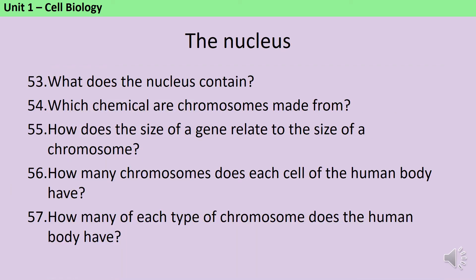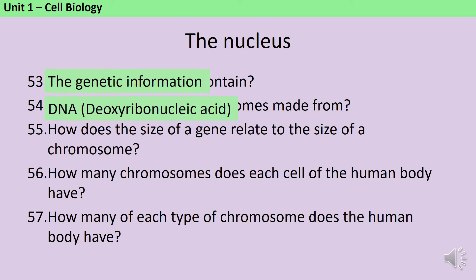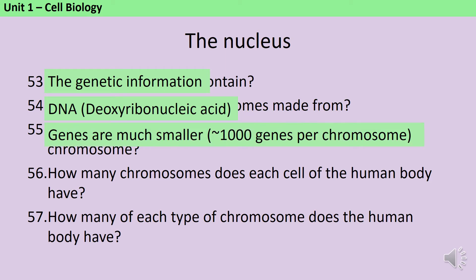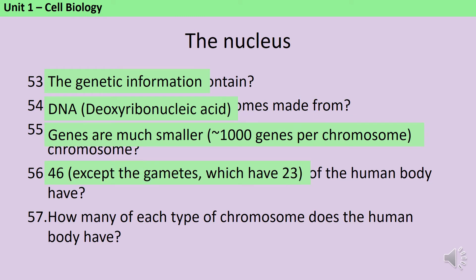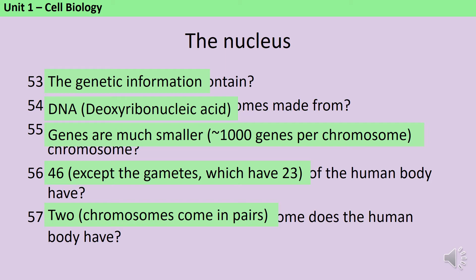The nucleus contains the genetic information in a eukaryotic cell. Chromosomes are made from DNA. Genes are much smaller than chromosomes, so each of your cells has 46 chromosomes and about 20,000 genes. Each cell of the human body has 46 chromosomes, apart from the gametes which have 23. Each of these are in pairs, so you have two of each type — one from your mum and one from your dad.